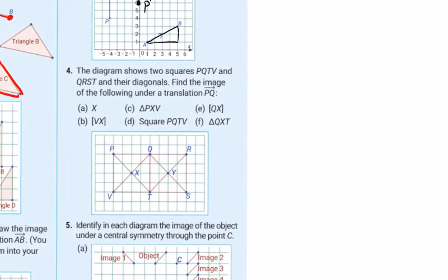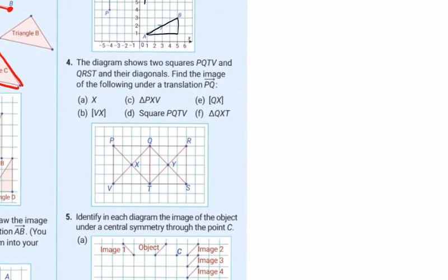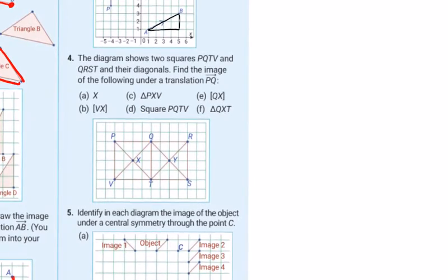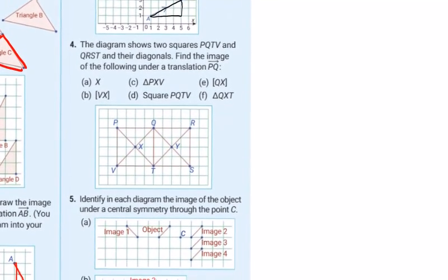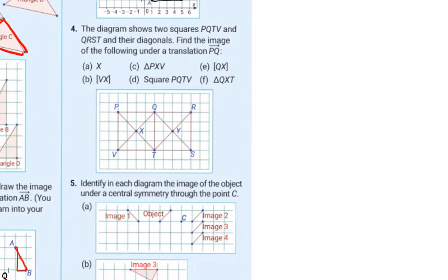Then into Question 4. The diagram shows two squares, PQTV - I'll just go over that in black - PQTV on the left here, so like a modern day TV channel, and QRST. So there's an overlap here, QRST.